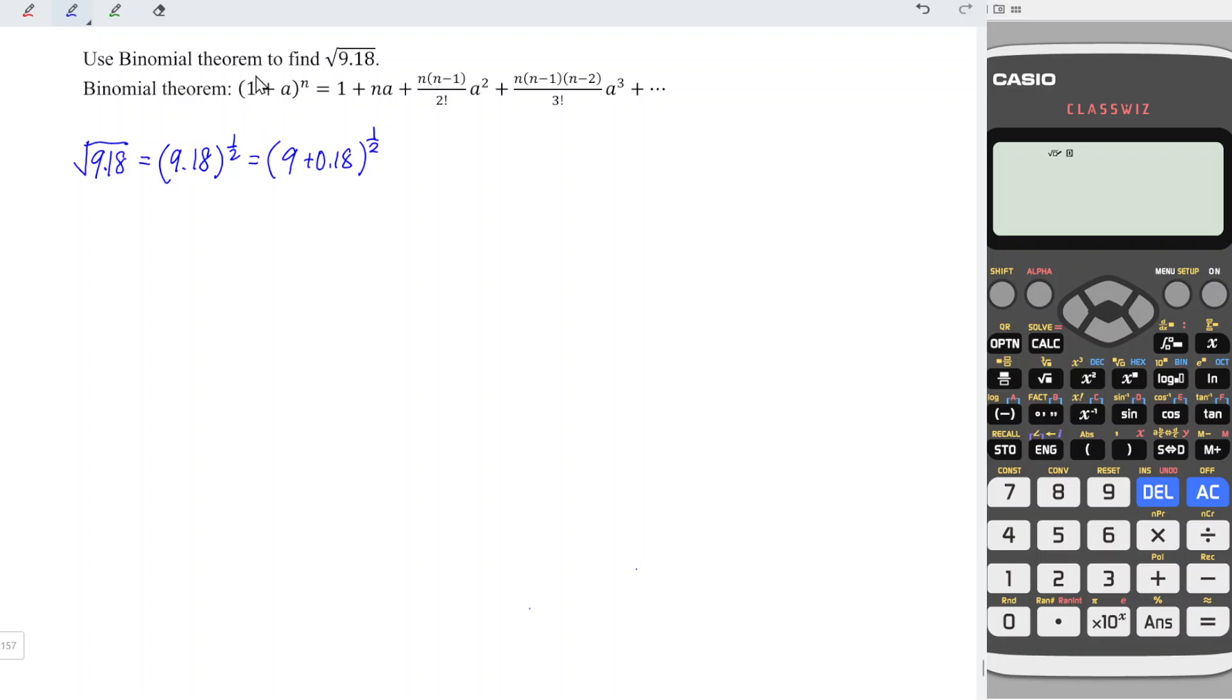But then what we need here for the first term is 1 if we refer to this formula. So in other words, we should factorize 9. If we take out 9, we should left 1, and we plus 0.18 divided by 9, which is 0.02, and the whole thing to the power 1 over 2.